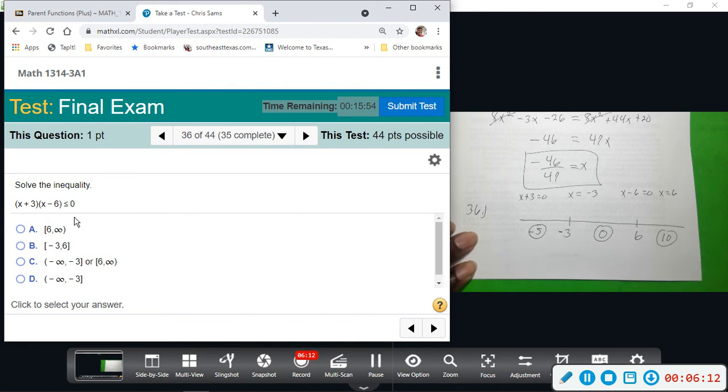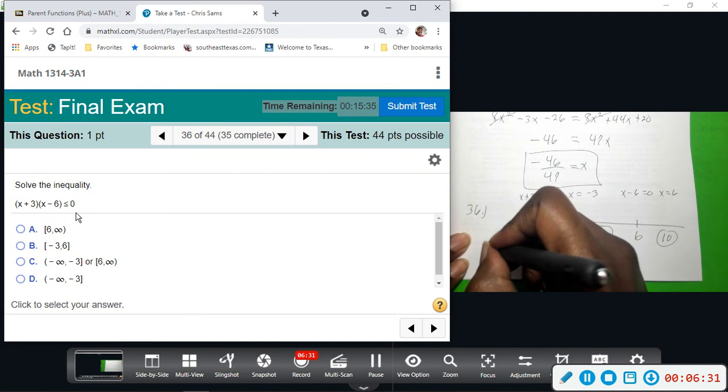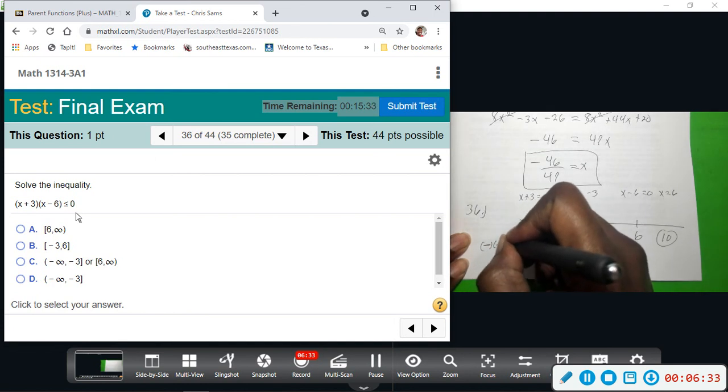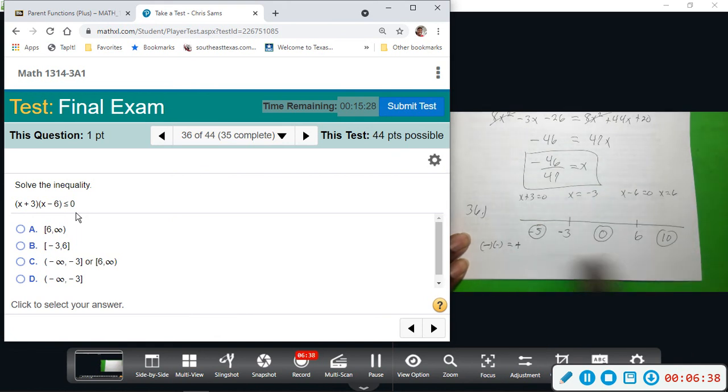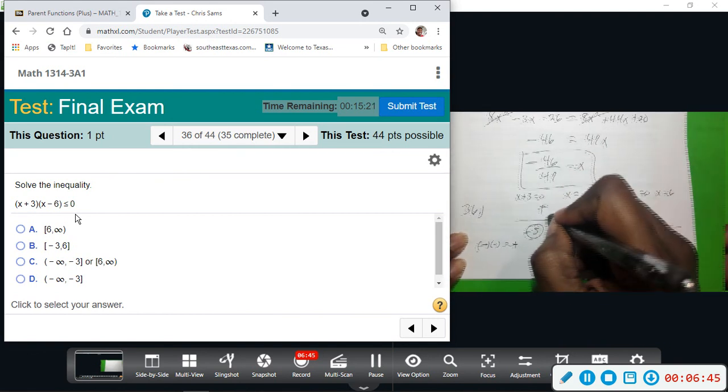So if I were to plug negative 5 right here, negative 5 plus 3 would give me a negative 2, so it would give me a negative number. I don't care about the 2, just have a negative number. If I were to plug negative 5 here, negative 5 minus 6 would also give me a negative number. Negative times a negative is a positive. A positive number will not be less than 0, so this is false. I don't want this section.